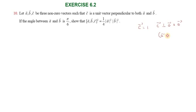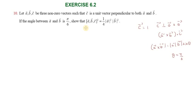So, A vector cross B vector dot C vector. The angle between A vector and B vector is theta. The magnitude of A vector cross B vector equals the determinant of A vector into the determinant of B vector into sin theta. And the angle theta is equal to pi by 6.